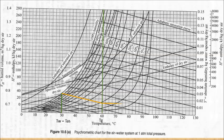From the intersection point, extend the line to the right axis, yielding a value for absolute humidity of 0.014 kg per kg dry air. Then draw a horizontal line from the same point to the left until it reaches the 100% humidity line, and drag the line downwards to obtain the dew point temperature, equal to 21.7 degrees Celsius.